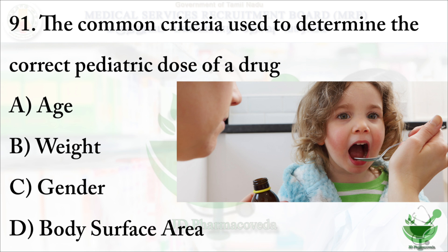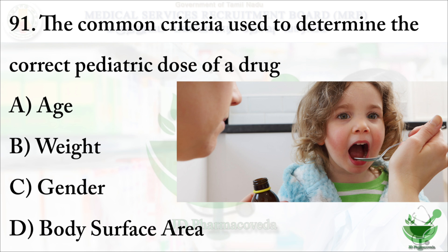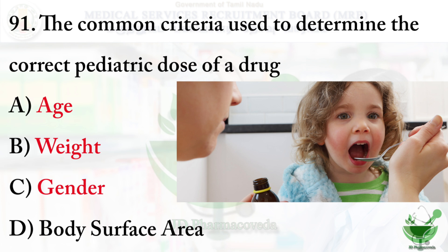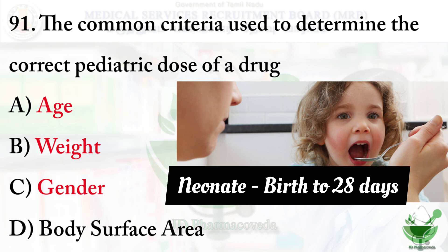Which criteria are required to find out the pediatric dose? The options are: option A — age, option B — weight, option C — gender, option D — body surface area. The right option is option A, B, C: age, weight, and gender are all criteria used to determine the pediatric dose. From this question, it can also be asked about neonates — neonates are from the baby's birth to 28 days.